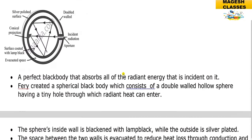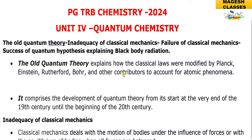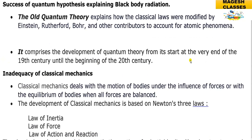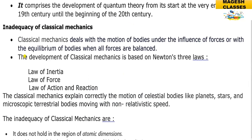The first topic is the old quantum theory, that is the inadequacy of classical mechanics — the failure of classical mechanics and the success of the quantum hypothesis in explaining black body radiation. The old quantum theory explains how classical laws were modified by Planck, Einstein, Rutherford, Bohr, and other contributors to account for atomic phenomena, from the end of the 19th century until the beginning of the 20th century.